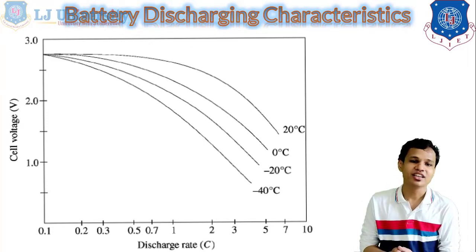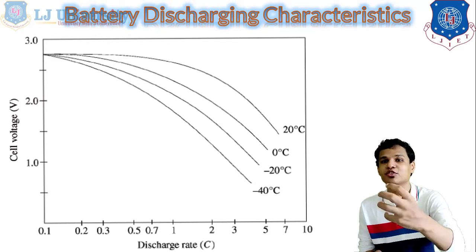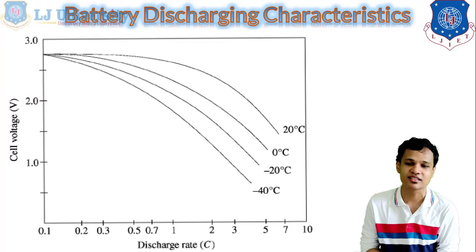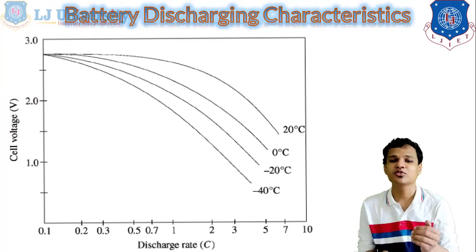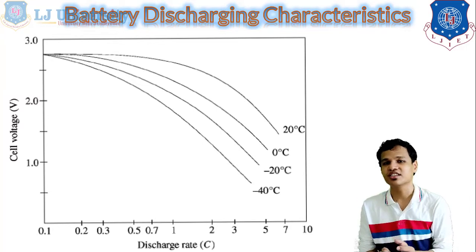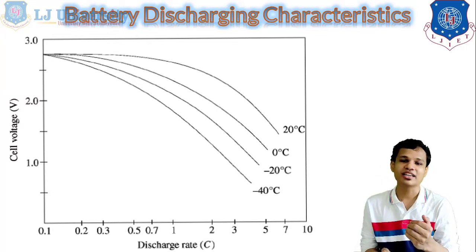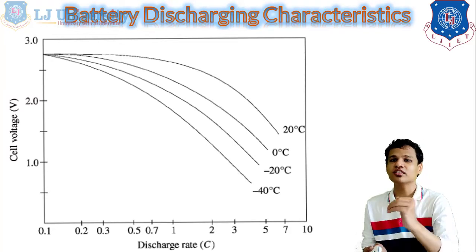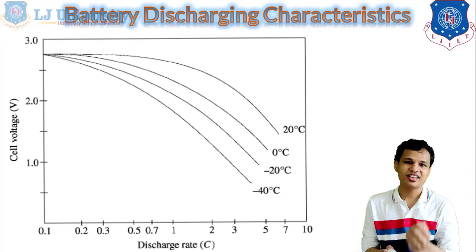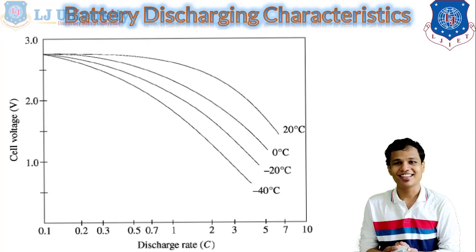You can see that at zero degrees Celsius the curve is lower, while the best curve is obtained at ambient temperature — around 20 degrees Celsius — where you get the highest cell voltage as well as discharge rate. As temperature decreases, the discharge rate and voltage both decrease. This covers the basic discharging characteristics of the battery. In the next lecture we will see the charging characteristics. Thank you so much.